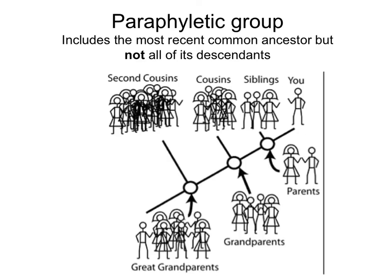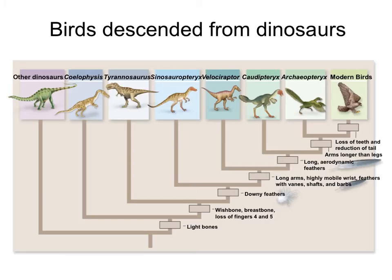Going back to a familiar example, a paraphyletic group would be like if your siblings, cousins, grandparents, and parents decided to form a family and leave you out. That would be a paraphyletic group because the common ancestor of everyone in that group are your grandparents, and you are also descended from those grandparents. If they leave you out, they are forming a paraphyletic group.